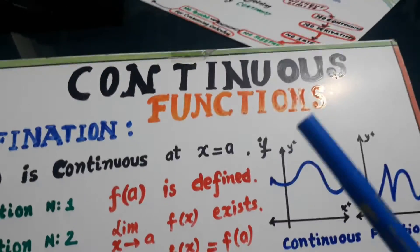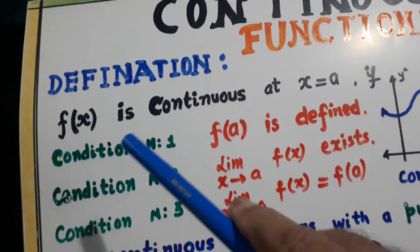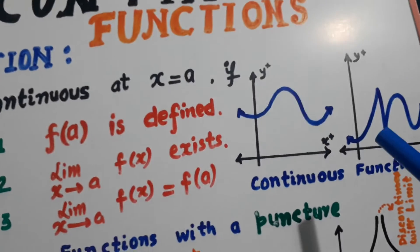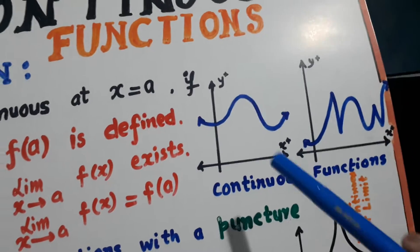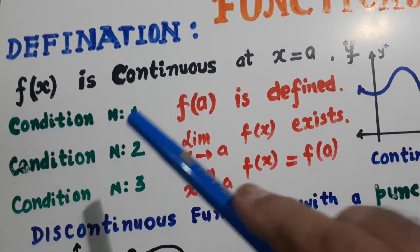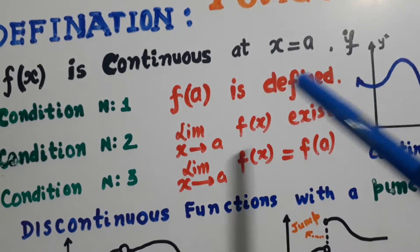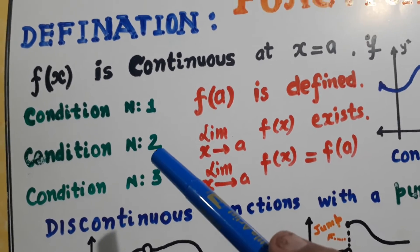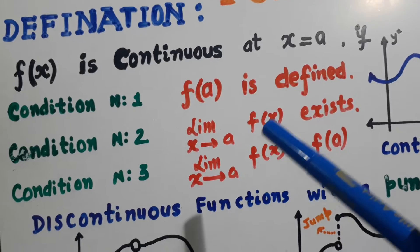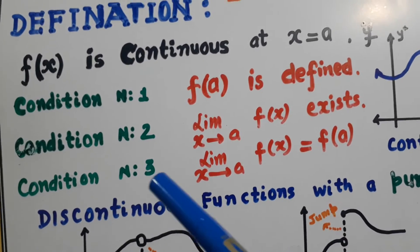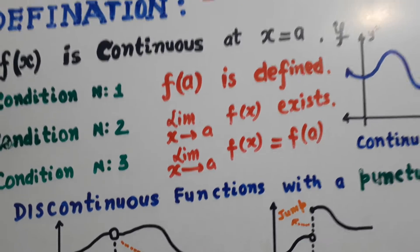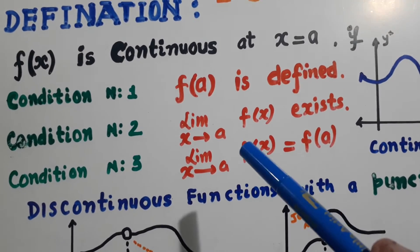Definition of continuous functions: f(x) is continuous at x equal to a. Condition number one: f(a) is defined — a definite value is there. Condition number two: limit as x goes to a of f(x) exists. Condition number three: limit as x goes to a of f(x) is equal to f(a). That is, limit is equal to value.